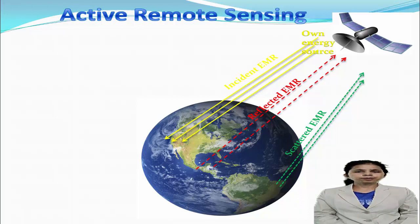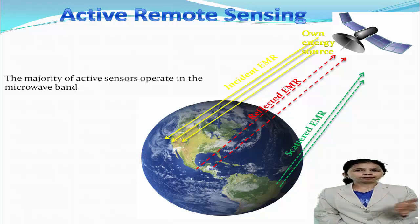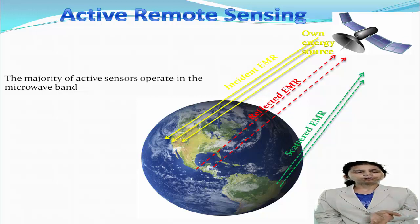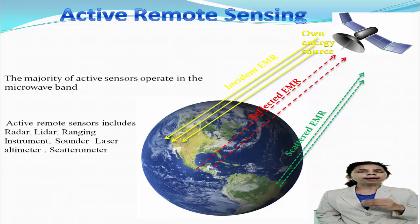The simplest example of active remote sensing is taking pictures with a camera using a flash. In darkness or at night, sunlight is not there, but you can take pictures using a camera with a flash — the flash falls on the object, that light is reflected and captured by the camera. Most active sensors use microwave radiation of the electromagnetic spectrum. These microwave radiations can penetrate through clouds, dust, smoke, fog, and water droplets. So active remote sensing can work in both day and night and also in very bad weather conditions and cloudy skies.